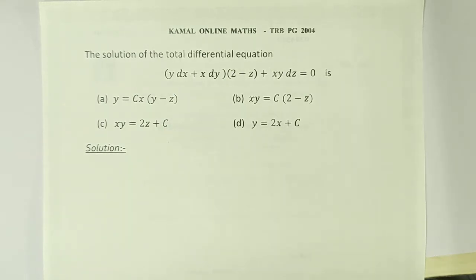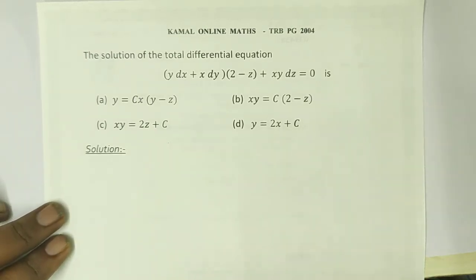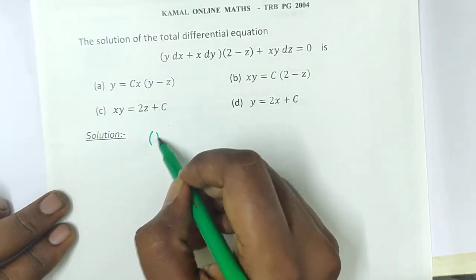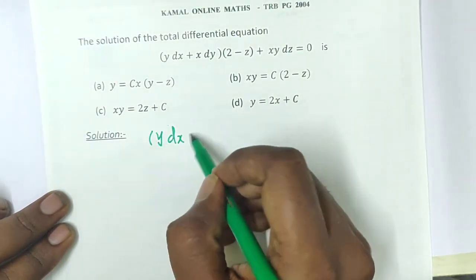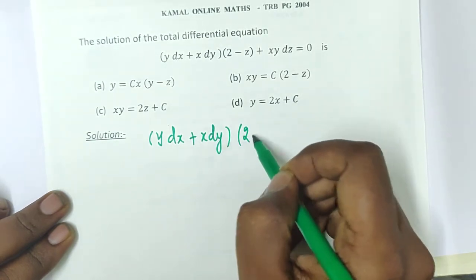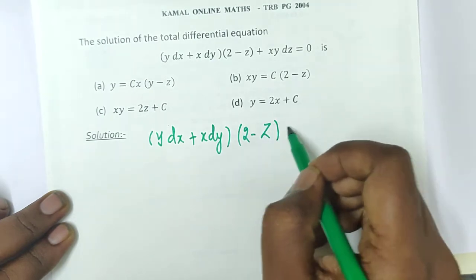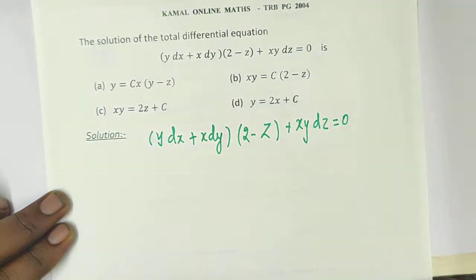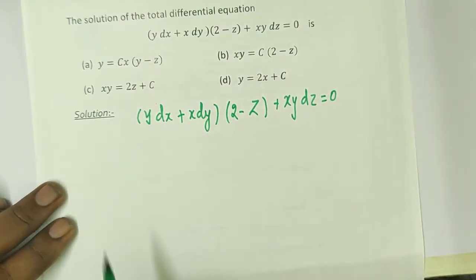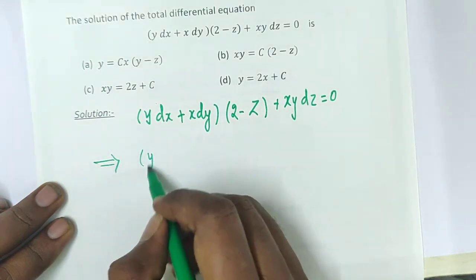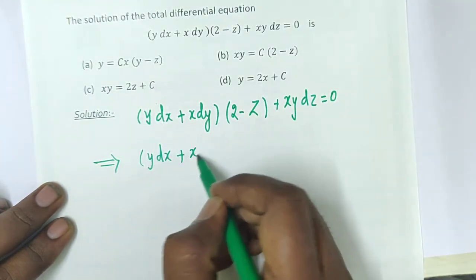In this differential equation, we need to find the general solution. So let's work on the solution of ydx plus xdy into (2 minus z) plus xy·dz equal to 0.